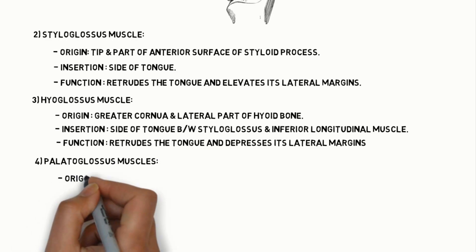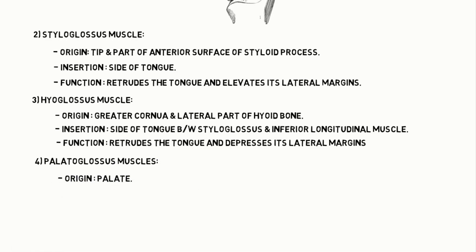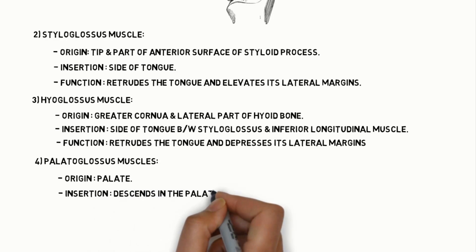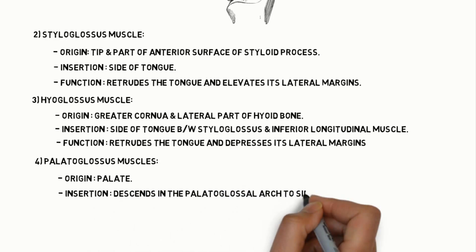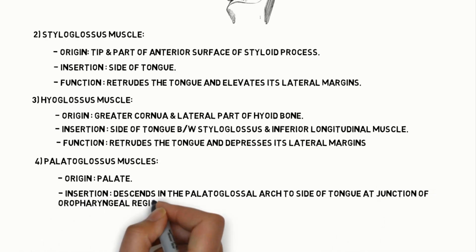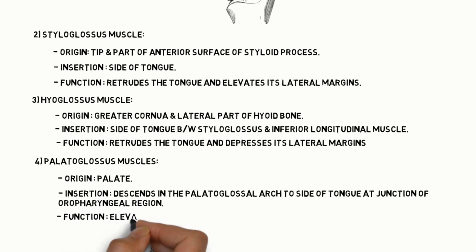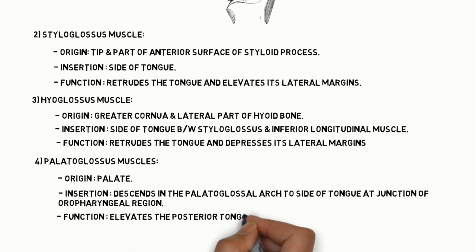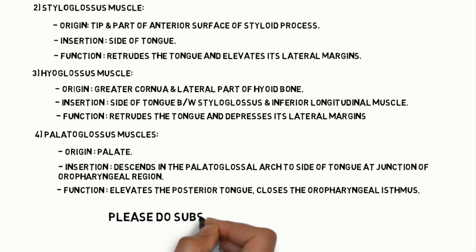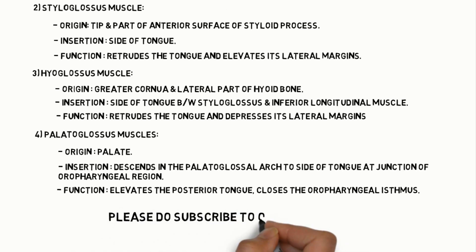Coming to the palatoglossus muscle, it originates from the palate. Insertion: it descends into the palatoglossal arch to the side of the tongue at the junction of the oropharyngeal region. Function: it elevates the posterior tongue and closes the oropharyngeal isthmus. Please remember, it is also known as the life-saving muscle.